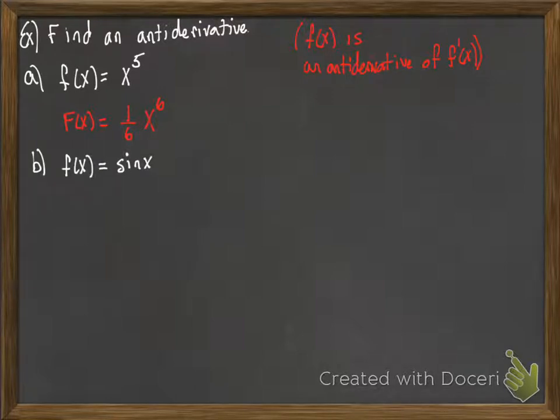What about an antiderivative of sine x? What function would we differentiate to get sine x? We'd have to go back and say, sine comes about from differentiating cosine. But we'll recall, cosine when you differentiate it's negative, but I need a positive sine, so my result must be negative cosine.